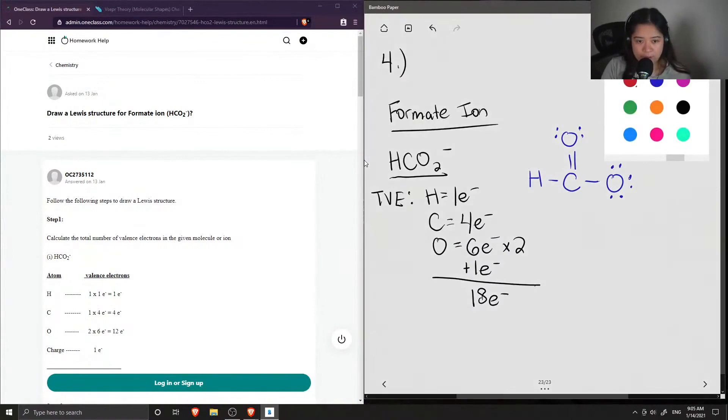So now I just want to calculate the formal charge of the ions. So the equation for formal charge is the number of valence electrons minus the number of non-bonding electrons minus the number of bonding electrons divided by two.